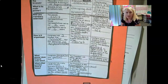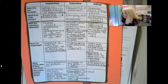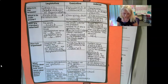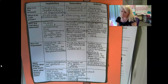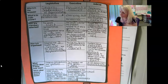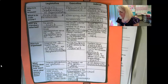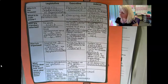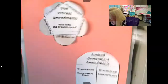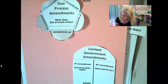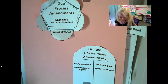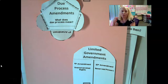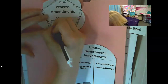We're going to move on to whatever amendments we can get done in the remaining time. Go ahead and grab your flower amendment foldable and the one that looks like a door with a canopy. Due process amendments — what does due process mean? Due process means that the government must follow its own rules, its own laws, that you have rights and that they cannot infringe upon or violate your rights. It's not above its own laws.